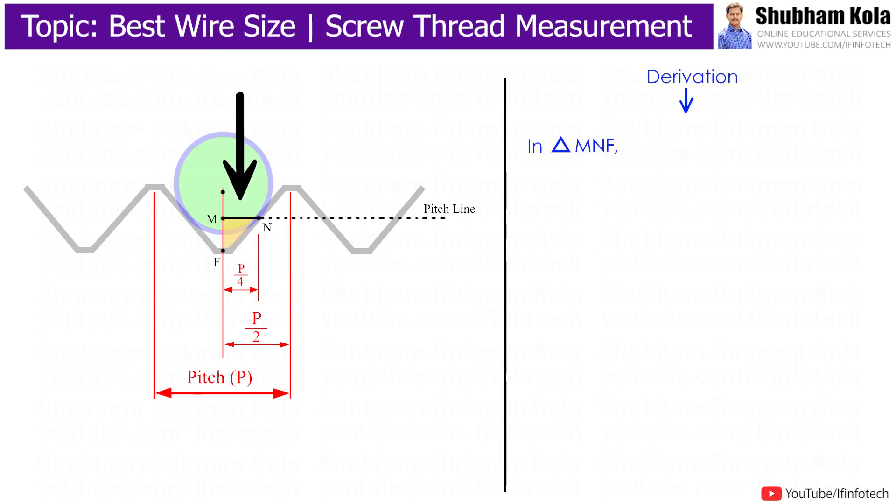In triangle MNF, since this angle is 90 degrees, and this angle is theta, so the remaining angle is 90 minus theta.